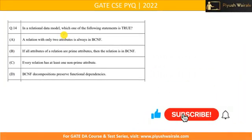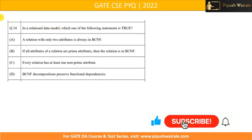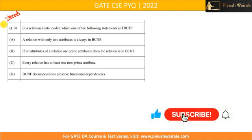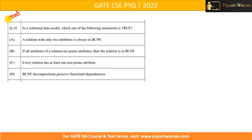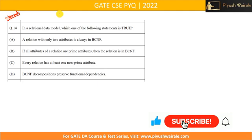Hello everyone. In the previous few lectures we have discussed normalization, the concept of functional dependency, and various types of normal forms. Now let us try to understand the concept in detail using a previous year question of GATE CSE branch. In GATE Data Science they will have simpler questions, so if you can solve previous year CSE questions, that is enough for this particular concept of normalization.